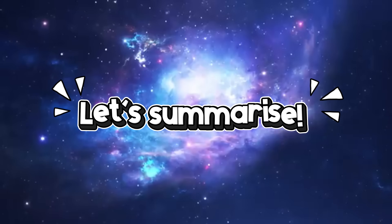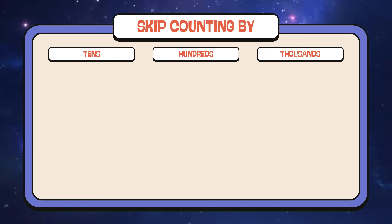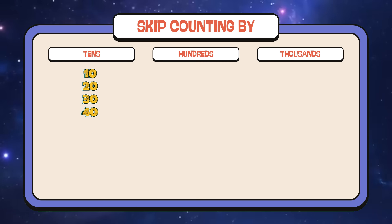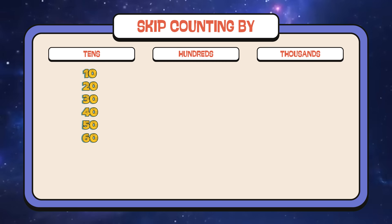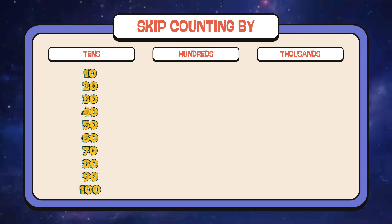Let's summarize. Skip counting by tens, hundreds, and thousands. Let's start with tens. 10, 20, 30, 40, 50, 60, 70, 80, 90, 100.